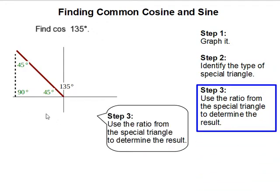Step 3: You can use the ratio from the special triangle to determine the result. So from this line, and since it makes a 45-45-90 triangle, we'll set up the ratio.